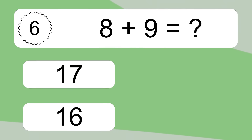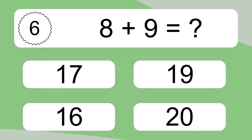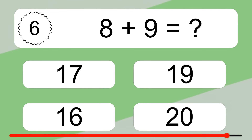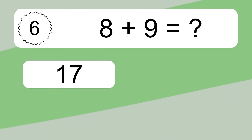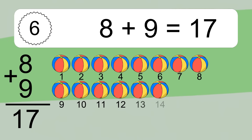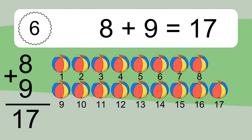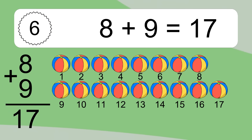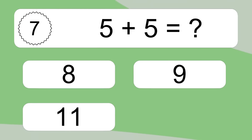8 plus 9 equals what? 8 plus 9 equals 17. Let's count it: 1, 2, 3, 4, 5, 6, 7, 8, 9, 10, 11, 12, 13, 14, 15, 16, 17.